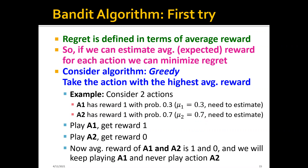Let's consider the greedy algorithm where we take the action with the highest average reward. For example, let's say we have only two actions, and action A1 will give you a reward of one with probability 0.3. So basically mu one is equal to 0.3. Note that this is the ground truth probability and it's not known. We need to estimate it as the experiment goes. The second action A2 has a reward of one with probability 0.7, so mu two is equal to 0.7.